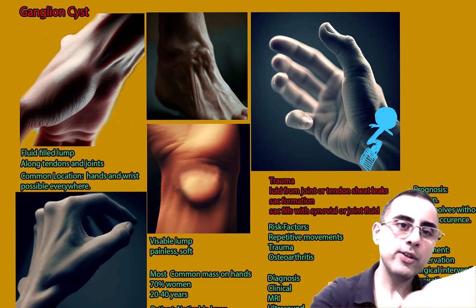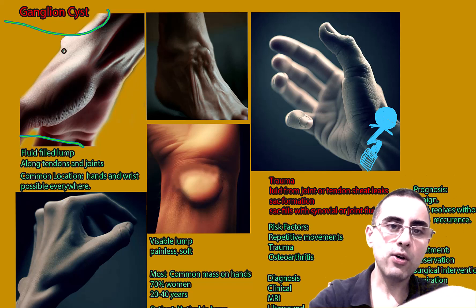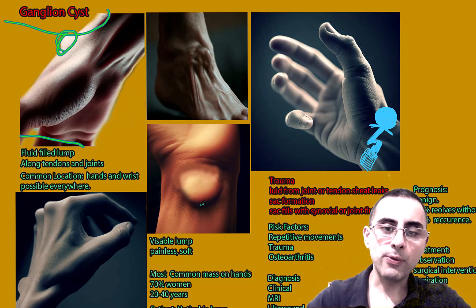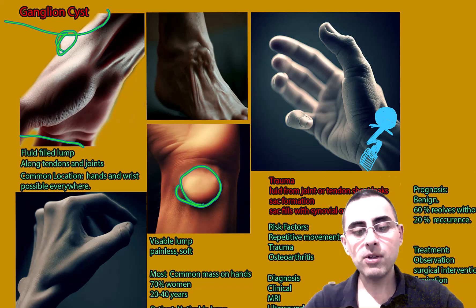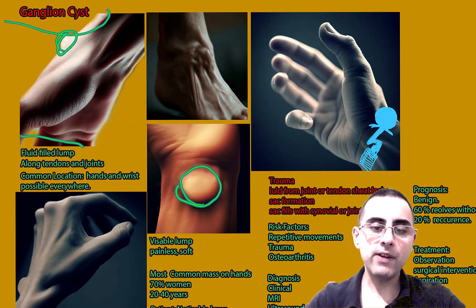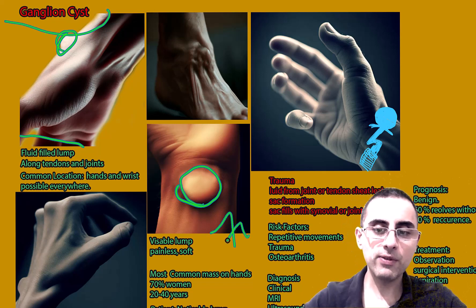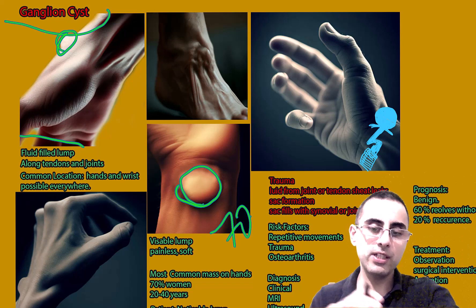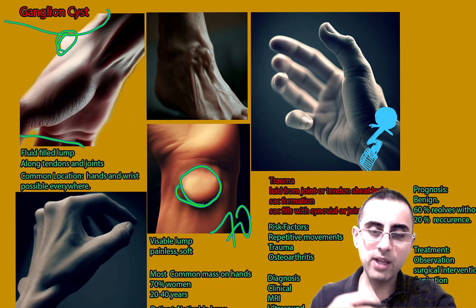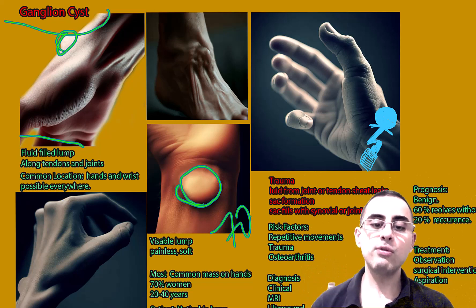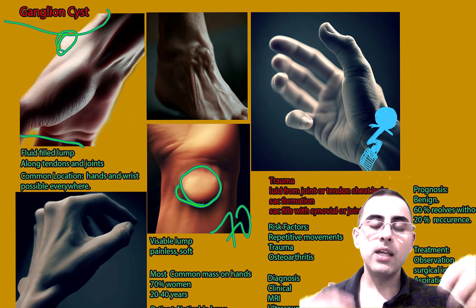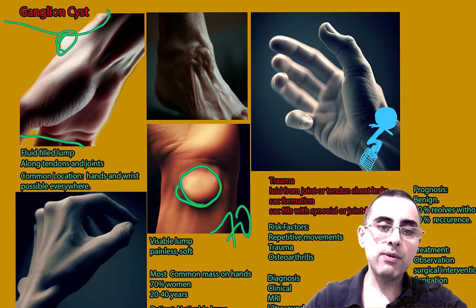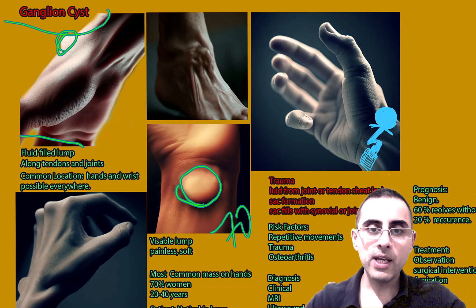We will talk about ganglion cyst. It is a fluid-filled lump, usually on the hand and wrist. It's a very common condition, usually affecting women in 70% of cases. Patients notice a lump which is soft when touching, usually painless, and usually visible.